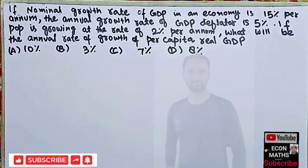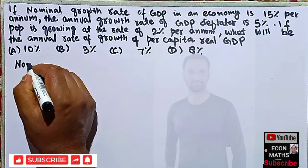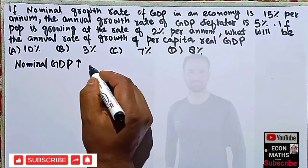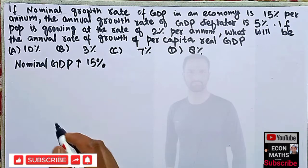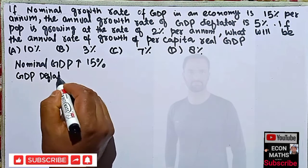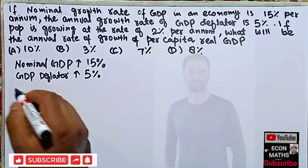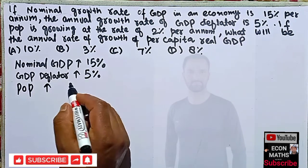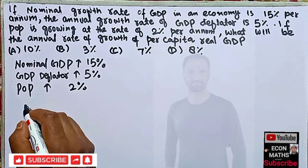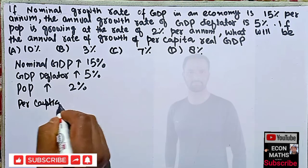We are given that nominal GDP is increasing at 15 percent per annum, the GDP deflator is increasing at a rate of 5 percent per annum, and population is increasing at the rate of 2 percent per annum. We have to find the per capita real GDP increase.